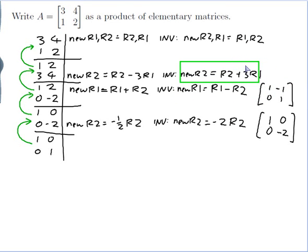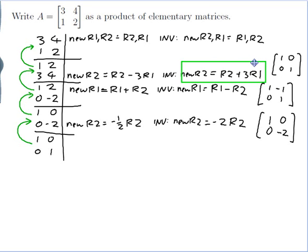Next, start with the identity and do 'new row 2 is row 2 plus 3 times row 1.' Row 2 of the identity plus 3 times row 1: 0 plus 3×1 = 3, and 1 plus 3×0 = 1. So the elementary matrix is [[1,0],[3,1]]. Finally, start with the identity and swap row 1 and row 2, giving the elementary matrix [[0,1],[1,0]]. Those are my 4 elementary matrices.